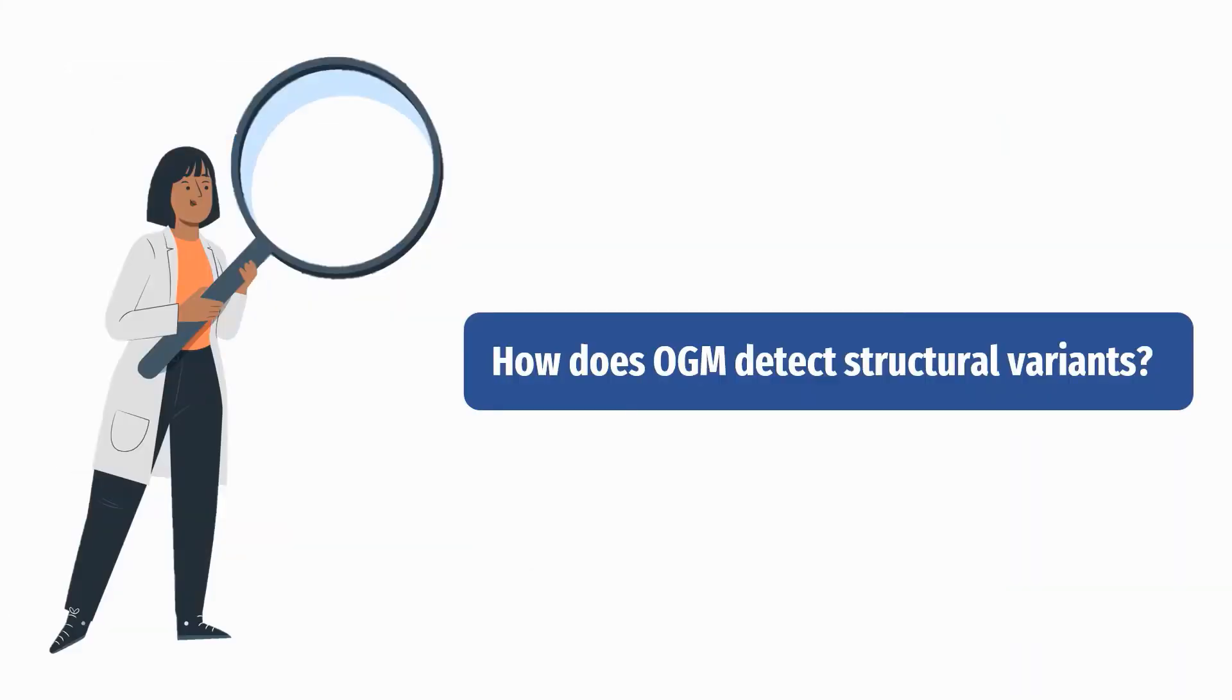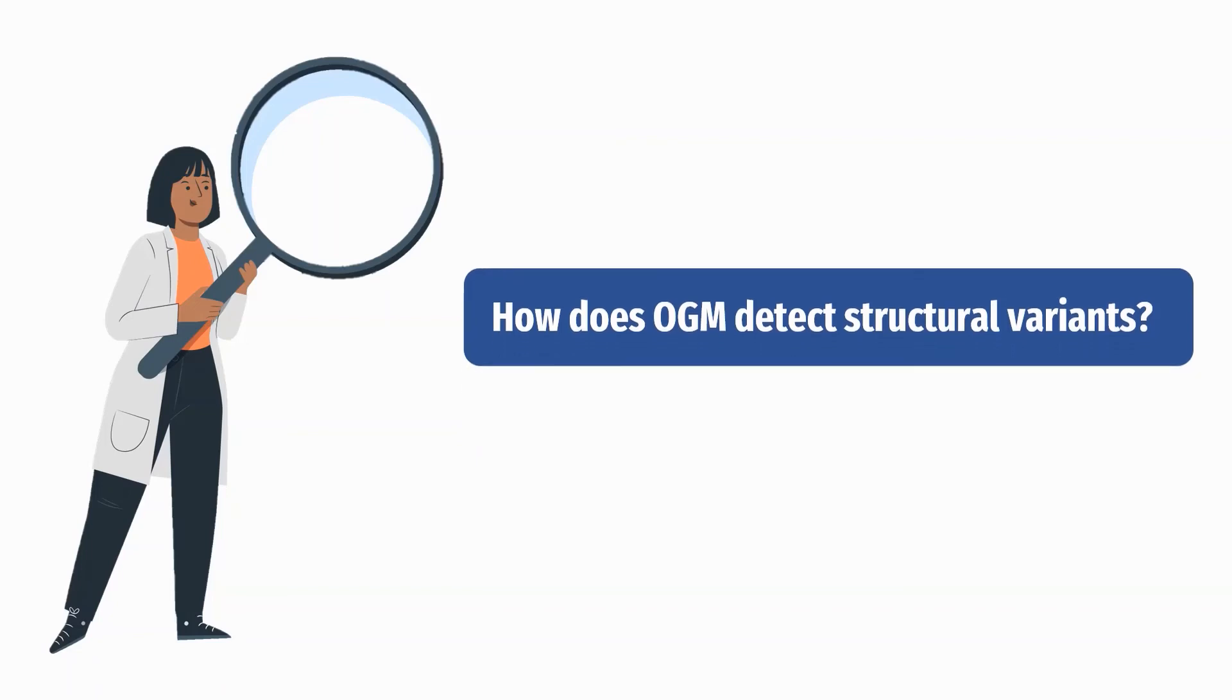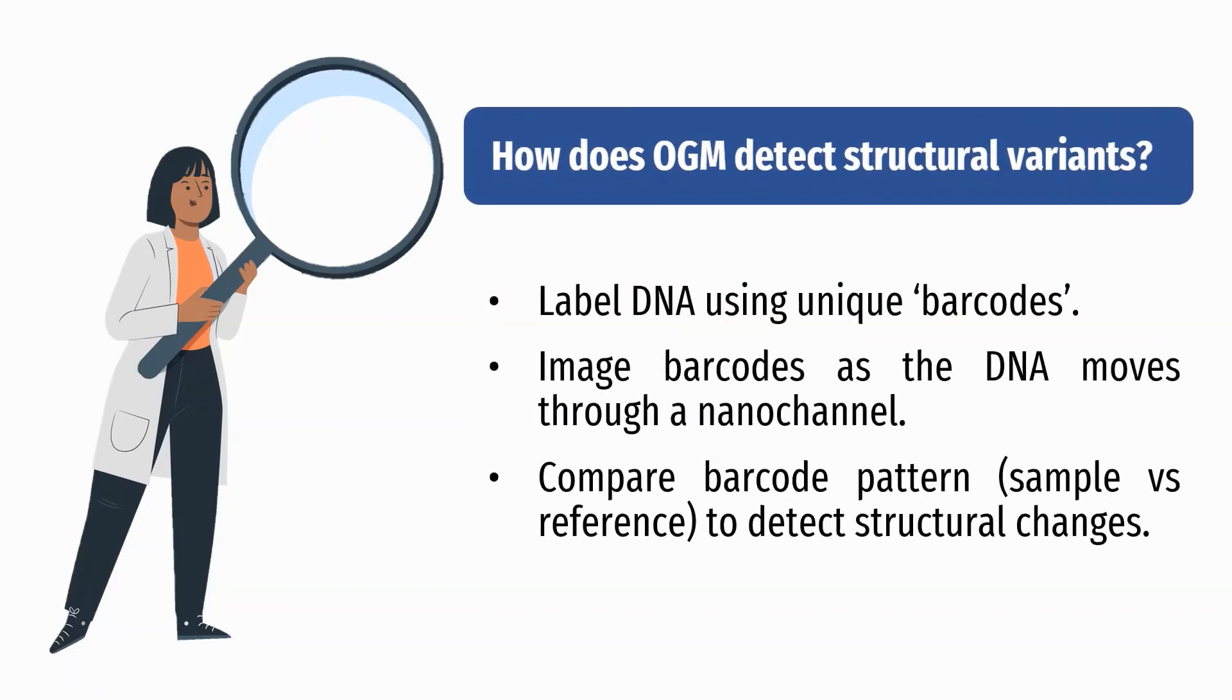How does OGM detect structural variants? OGM detects structural variants by labeling DNA using unique barcodes. Images of these barcodes are taken as the DNA moves through a nanochannel, and these images are compared to the pattern of barcodes upon a reference genome to detect the structural changes to the sample genome.